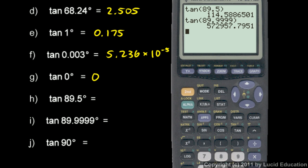572,958 approximately. And if we go all the way to 90, the tangent of 90 degrees is error, domain error. We can't put 90 into the tangent function.